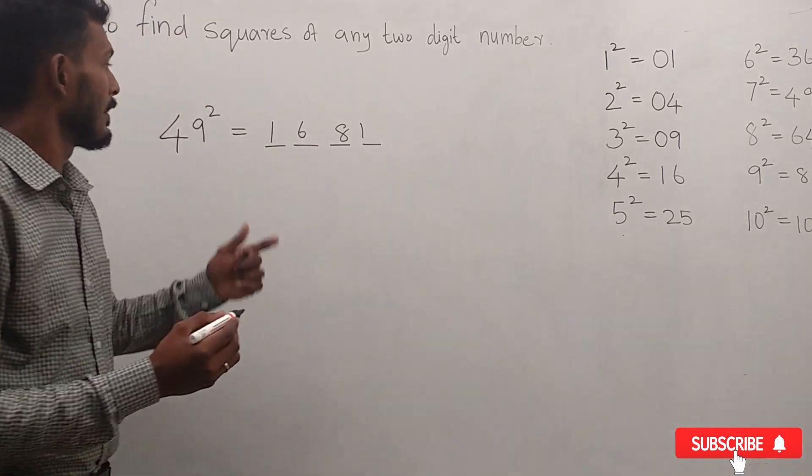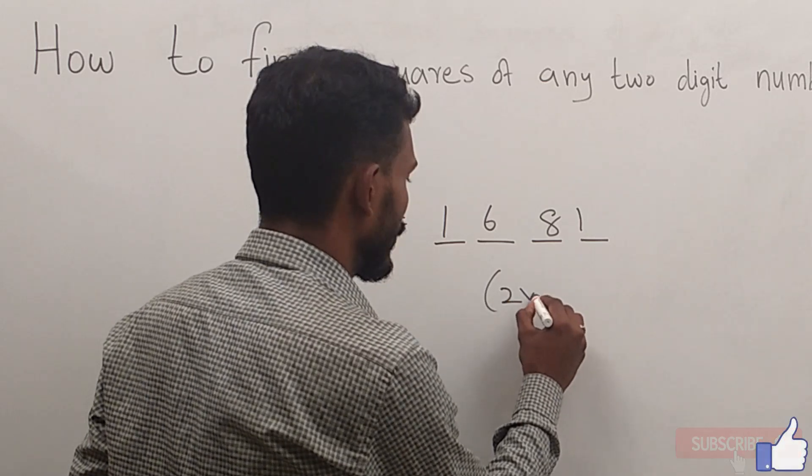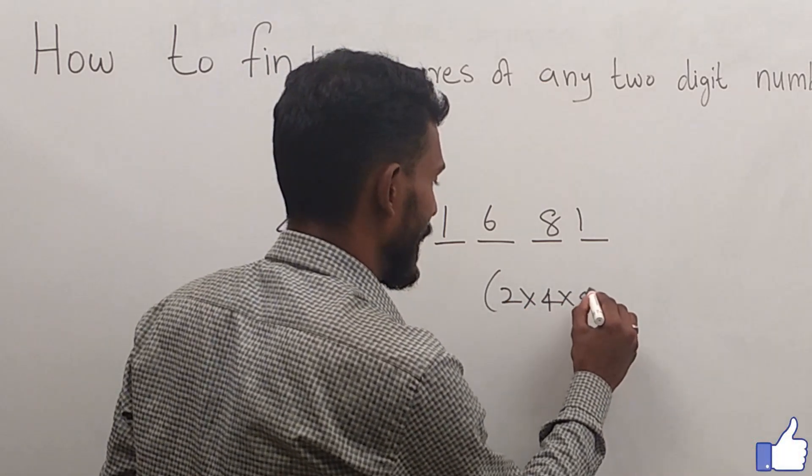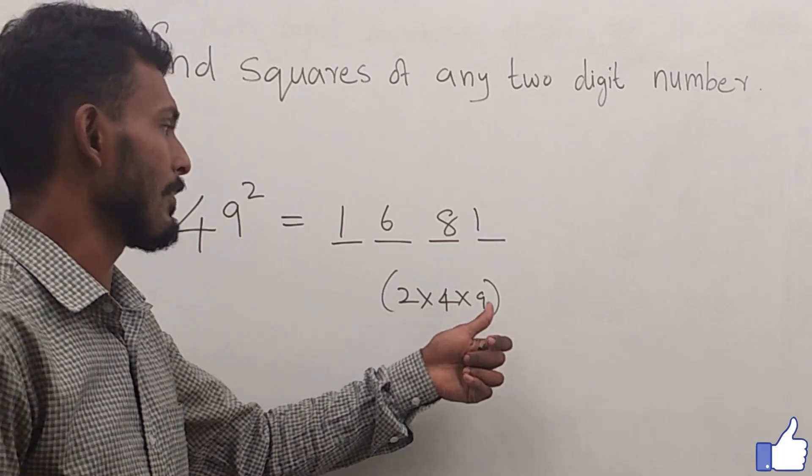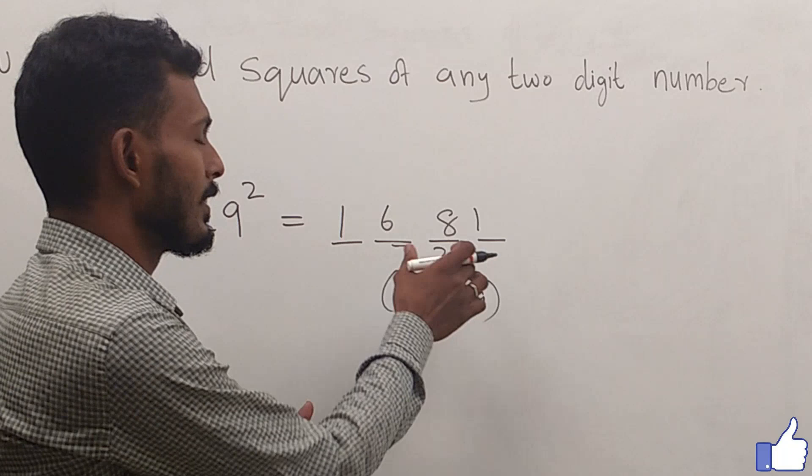Then, we have to make 2 × 4 × 9, that is, 8 × 9, which is 72. We have to write down this 72 here. Then, finally is the value.